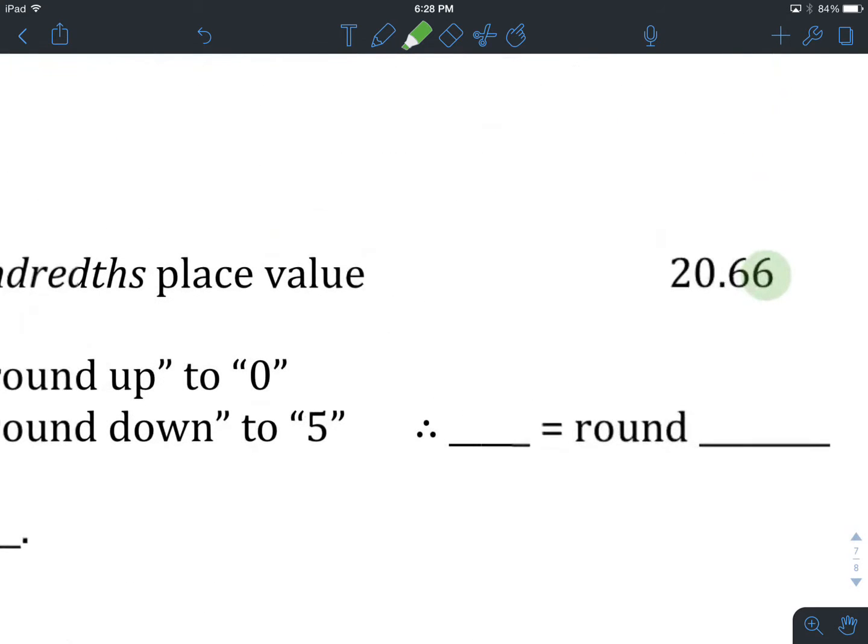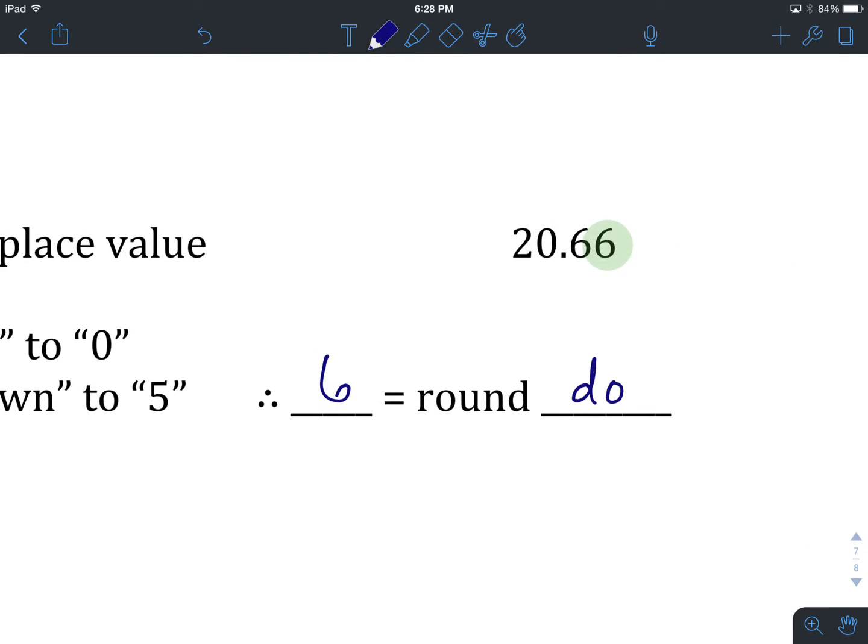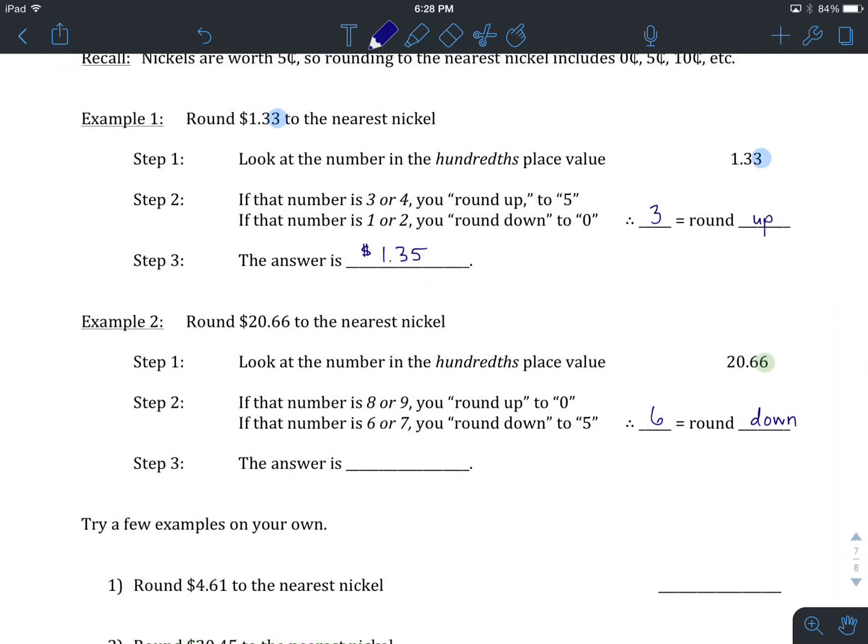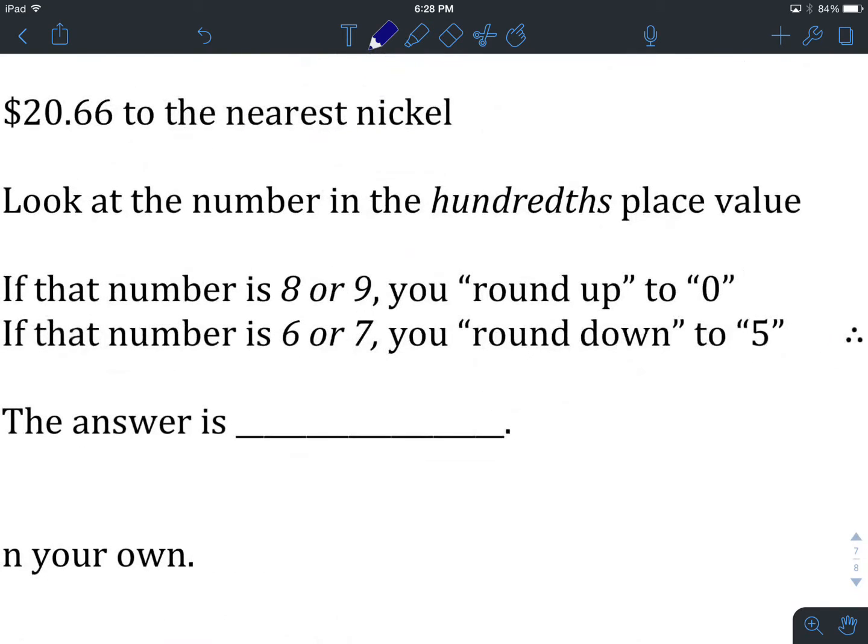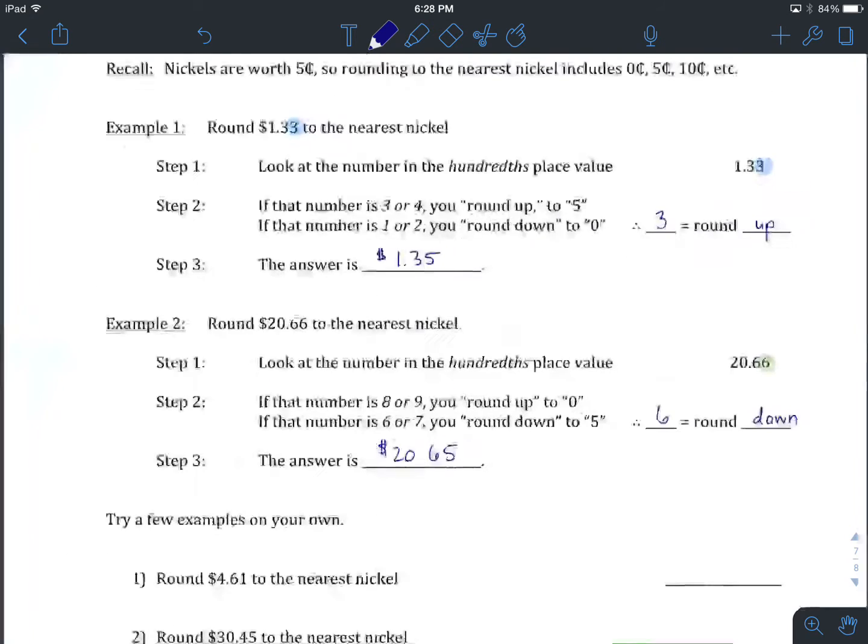In this case, we have a 6. 6 means that we round down. It's not high enough for us to round that up. Our options here were $20.65 or $20.70. When we see that we're talking about a 6, we know we're going to round down. So our answer then is going to be $20.65.